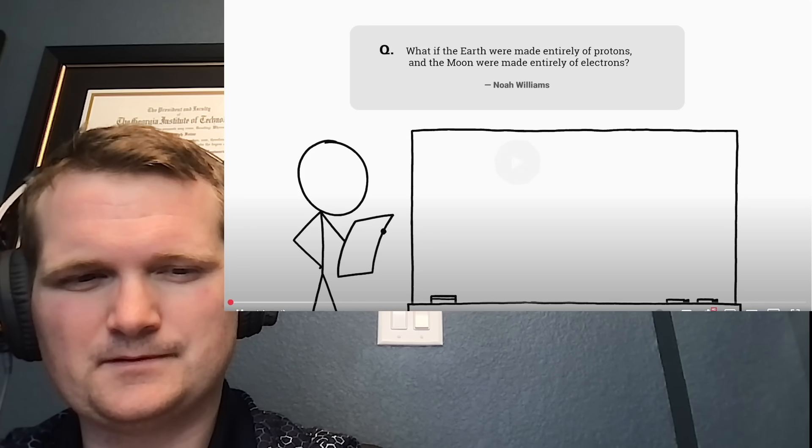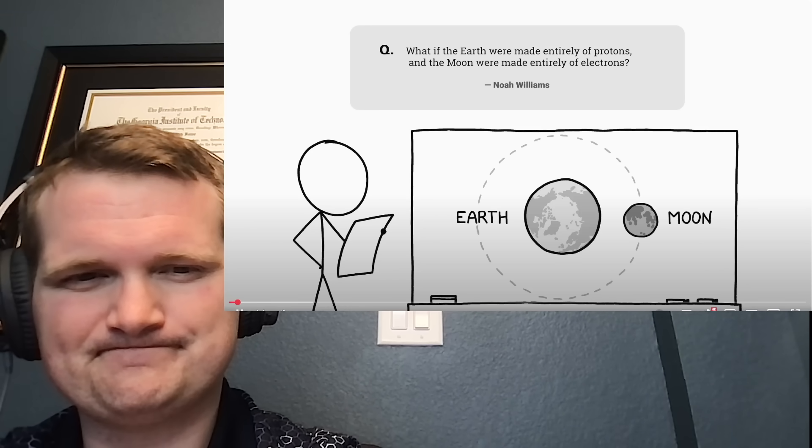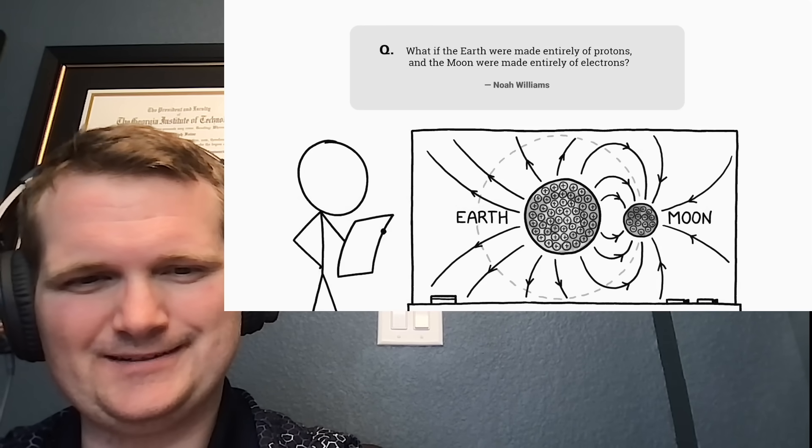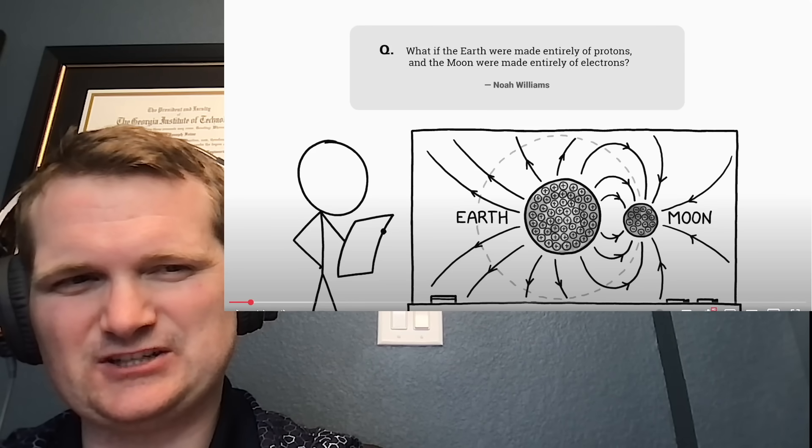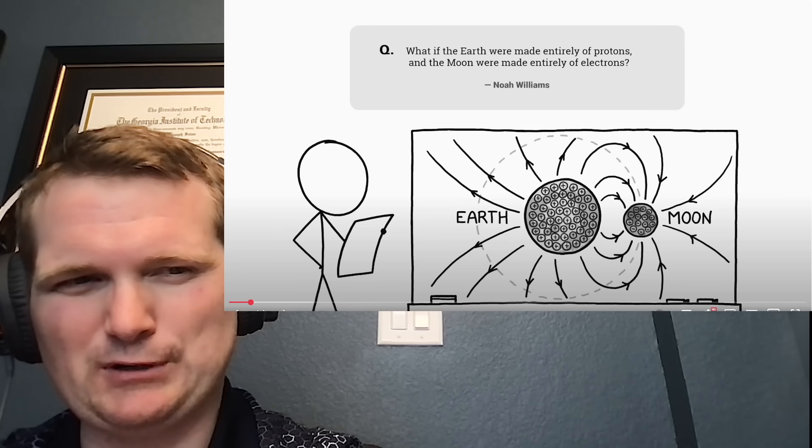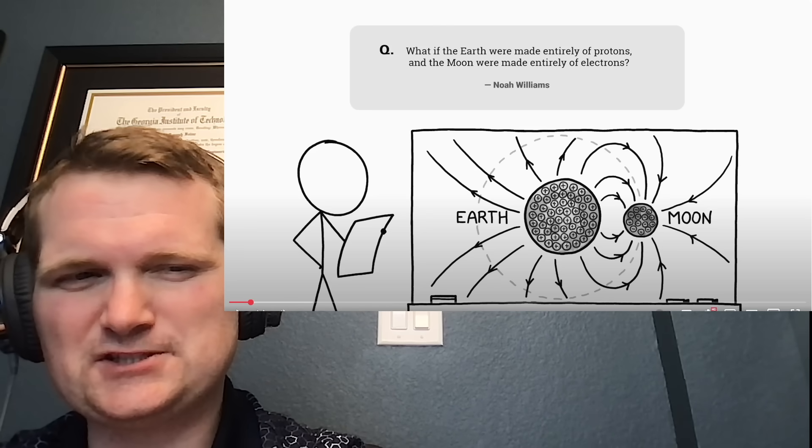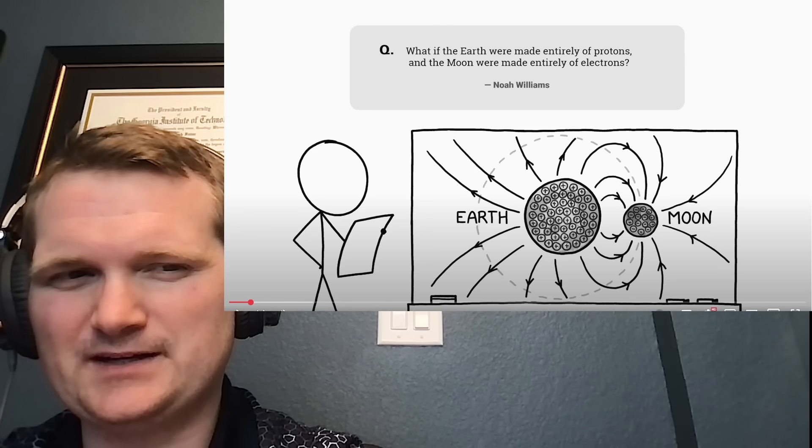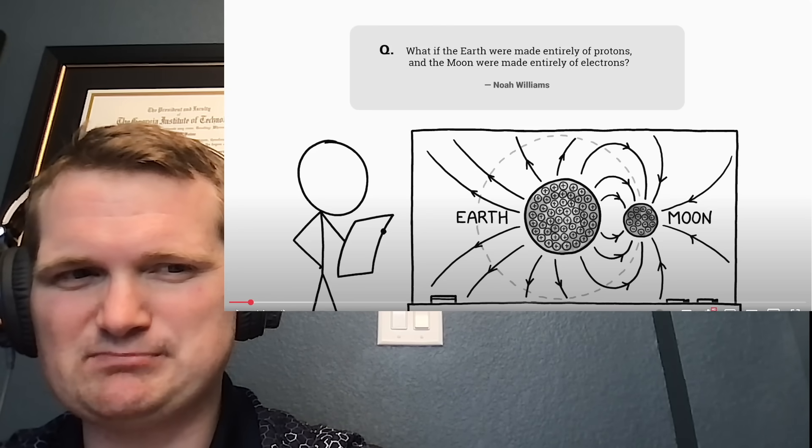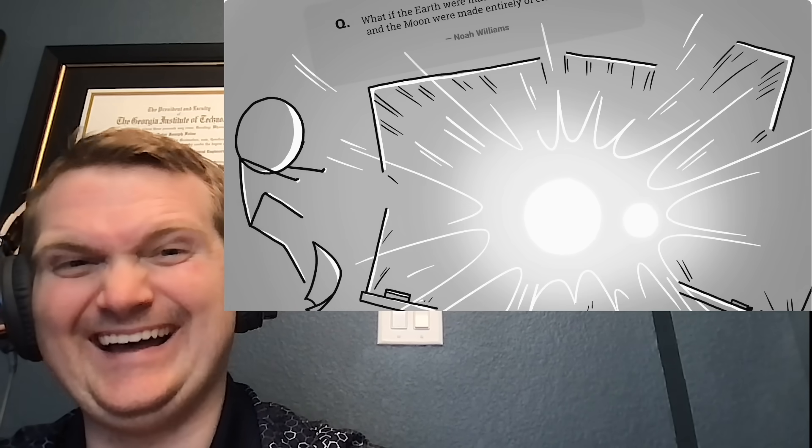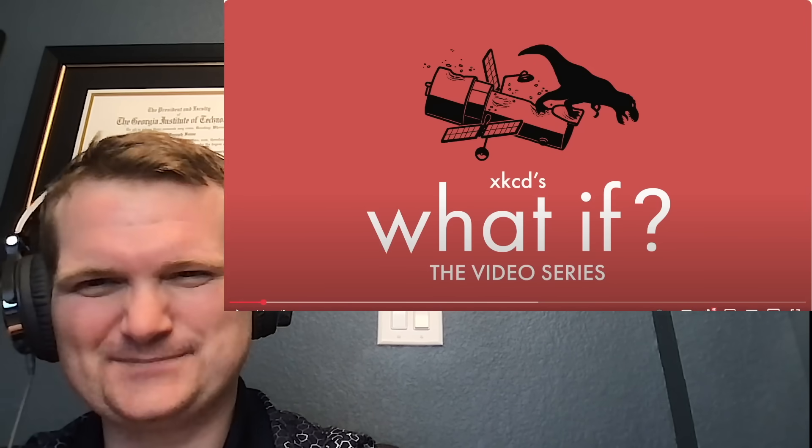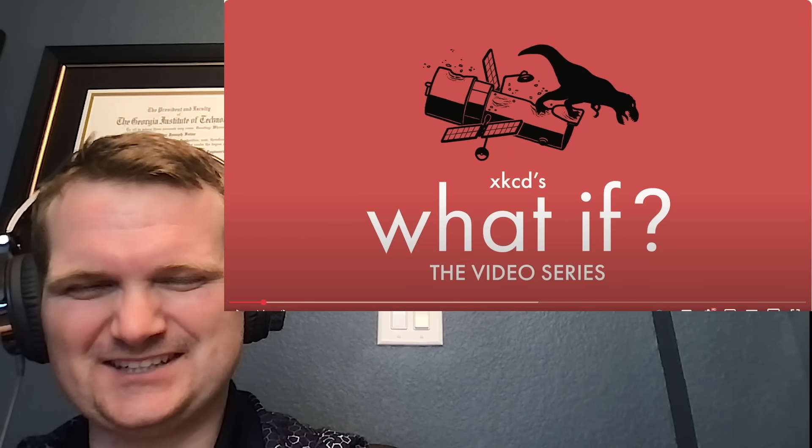Let's see. This question comes from Noah, who asks: What if the Earth were made entirely of protons and the moon were made entirely of electrons? So you're going to get the universe's largest uncontrolled particle accelerator failure. Think Chernobyl, but instead of graphite blocks, it's much of space being torn apart. This is by far the most destructive what-if scenario today. That's an understatement. Now there's been a lot of destructive scenarios on this channel.